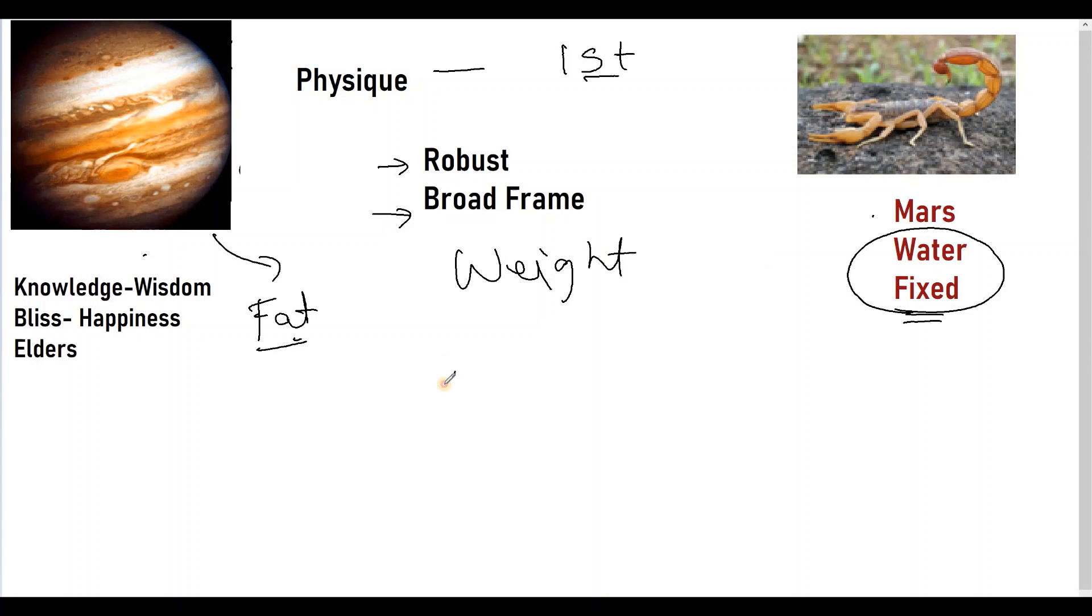But then suppose there is an aspect of Saturn on this Jupiter. Now, remember I am taking, I am talking about aspect not Saturn being with the Jupiter. Saturn being with the Jupiter would make Saturn also in a watery sign. So that would have a slightly different impact. But if Saturn has an aspect here and Saturn's aspect is actually opposite to what Jupiter does. Jupiter is the planet of expansion whereas Saturn is the planet of contraction. So if Saturn aspects this Jupiter it would provide or modify this in a certain way that the person will not have that great tendency to gain weight easily.